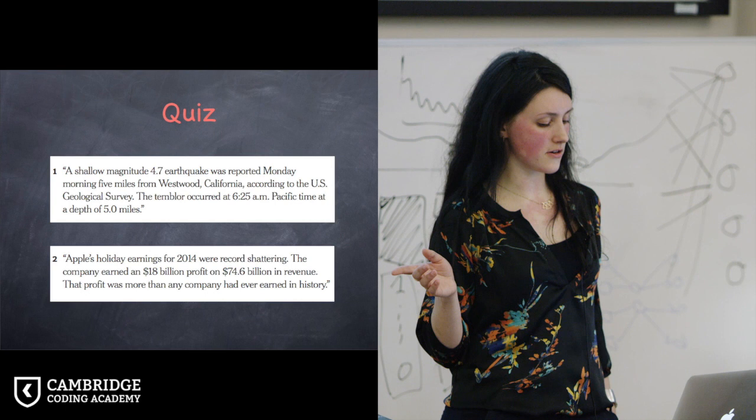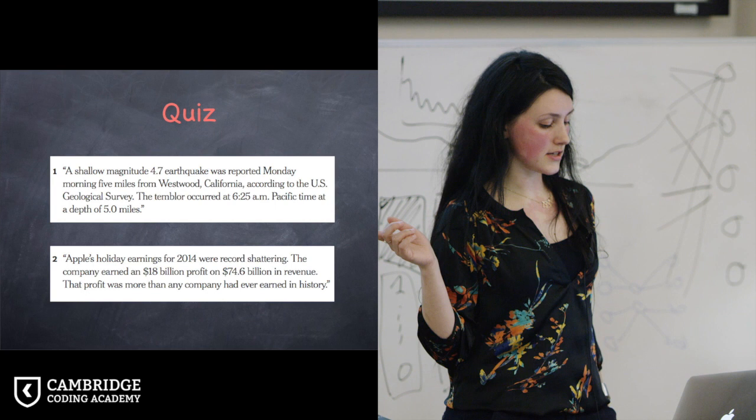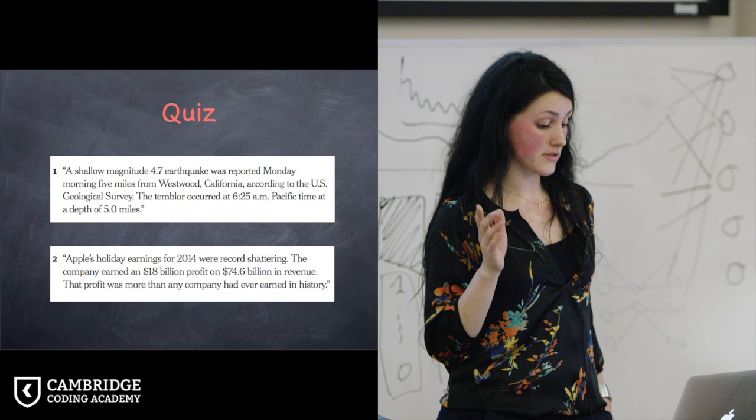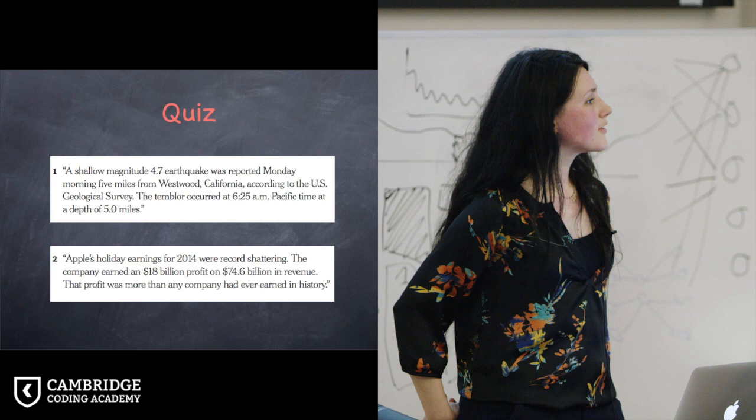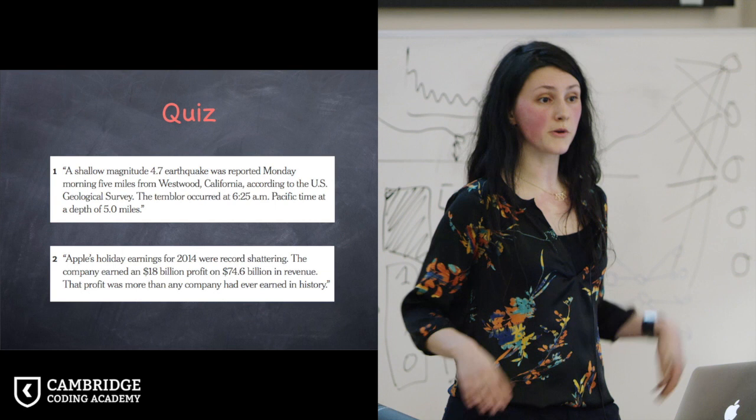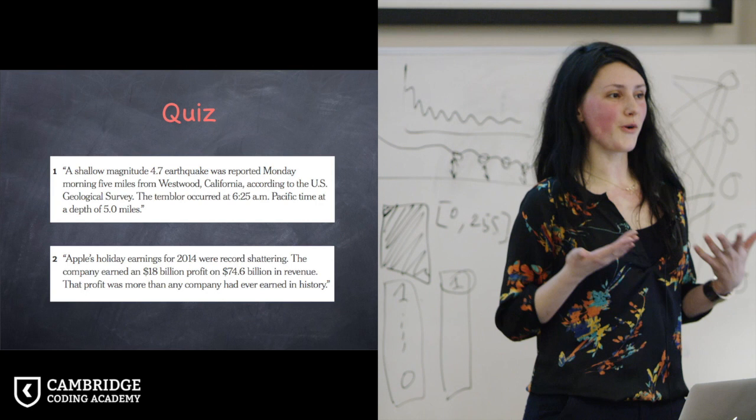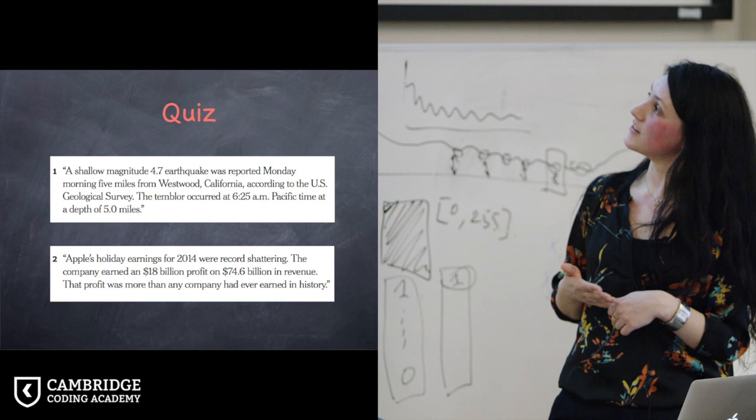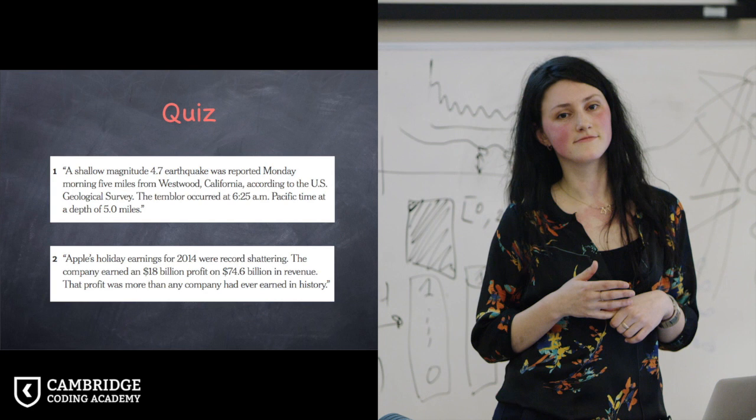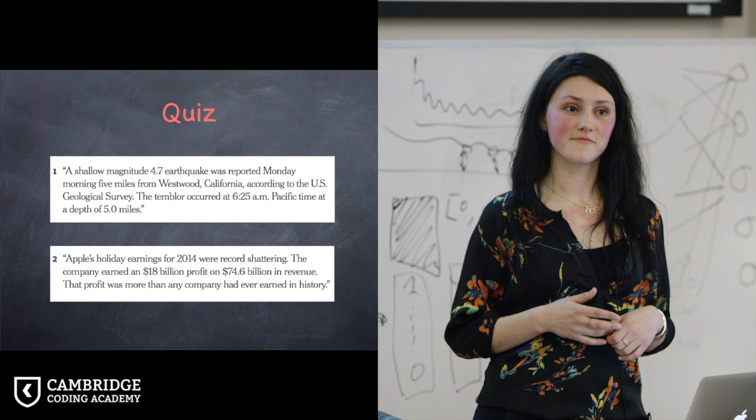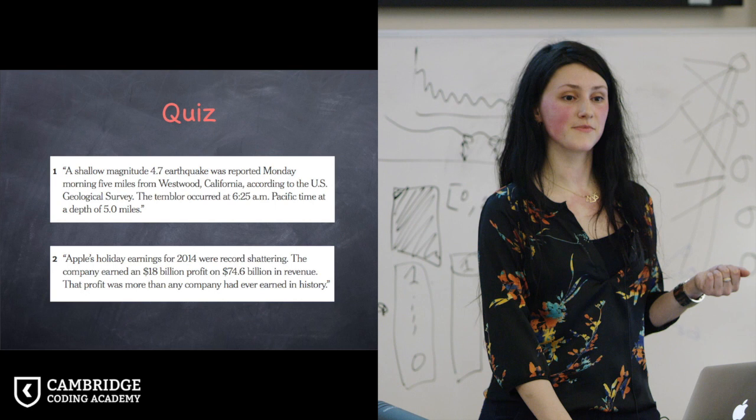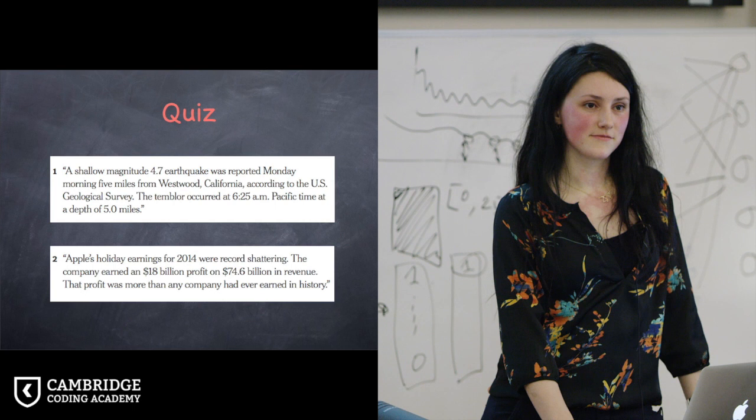What about the second one? Apple's holiday earnings for 2014 were record-shattering. The company earned an $18 billion profit on $74.6 billion in revenue. That profit was more than any company had ever earned in history. So who thinks this has been written by a human? And others think this has been written by a machine, right? So it's more like 50-50. Do you have any kind of intuition? Why? Or how you can distinguish between the two? Record-shattering. Record-shattering. Okay. So what does that suggest? To me, humans don't generally say, was record-shattering. It's not a common expression. Okay. So you think this suggests this is a machine? For me, it's quite the opposite.